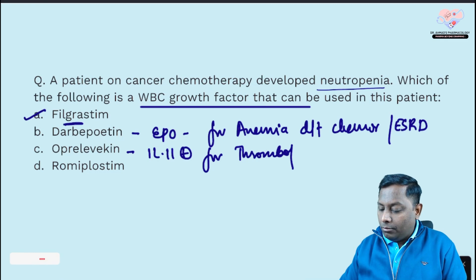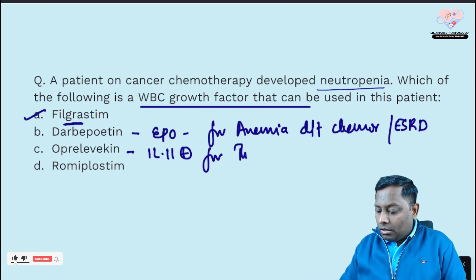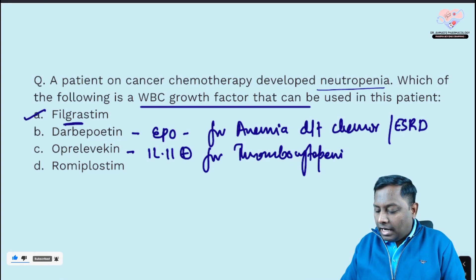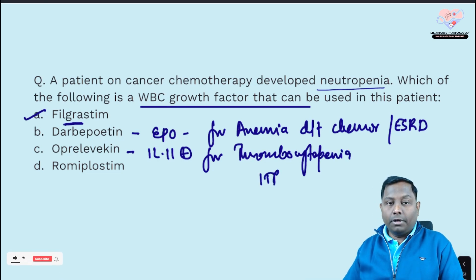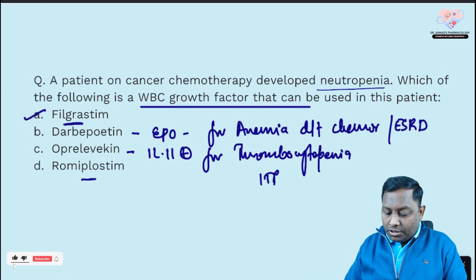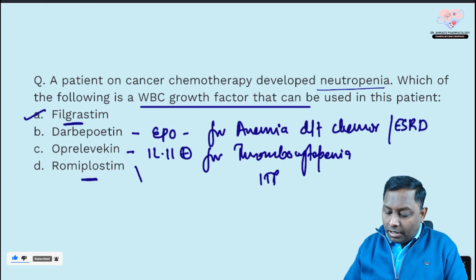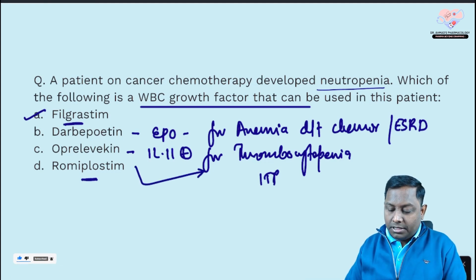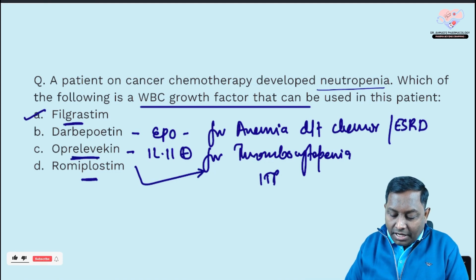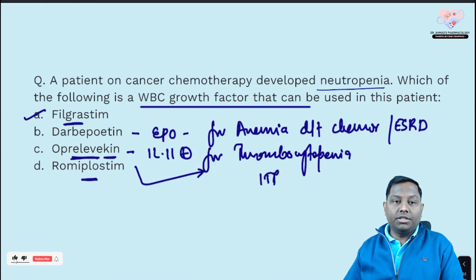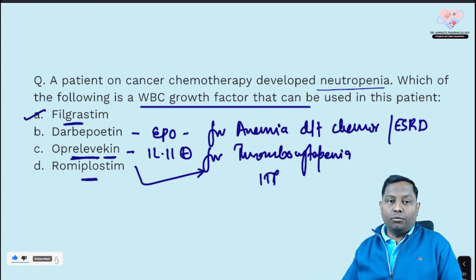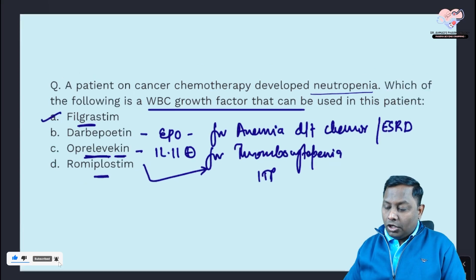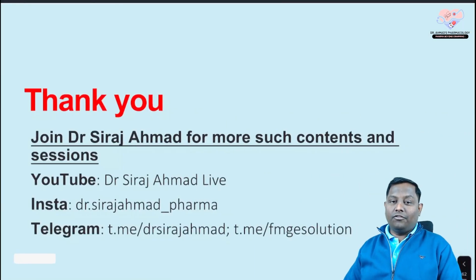Oprelvekin is an interleukin-11 agonist used for chemotherapy-induced thrombocytopenia or ITP (idiopathic thrombocytopenic purpura). Romiplostim is a thrombopoietin receptor agonist also used for the same purpose. So to summarize: darbepoetin is an erythropoietin agonist, oprelvekin is an IL-11 agonist, and filgrastim is the correct answer for neutropenia.